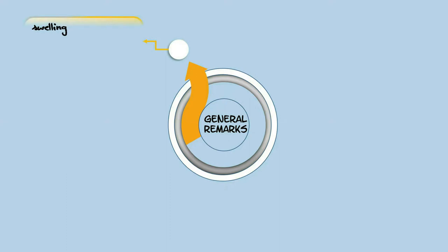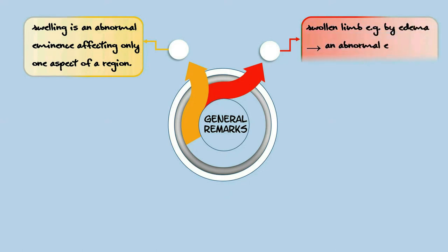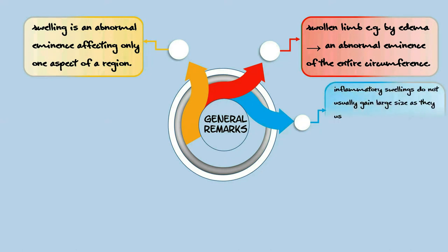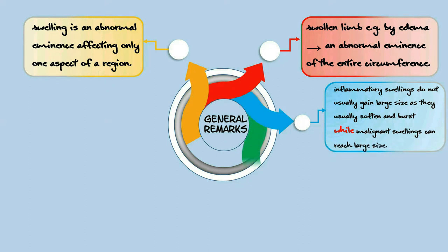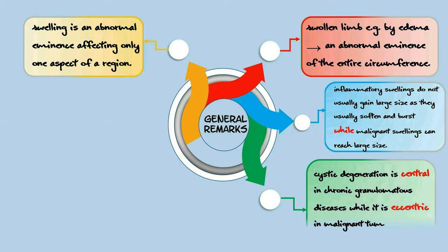A swelling is defined as an abnormal eminence affecting only one aspect of a region, while a swollen limb — for example, by edema or lymphedema — is defined as an abnormal eminence of the entire circumference of the limb. Inflammatory swellings do not usually gain large size, but they usually soften and burst, while malignant swellings can reach large size. Another important note is that cystic degeneration in chronic granulomatous diseases is central, but in malignant tumors it occurs in an eccentric manner.